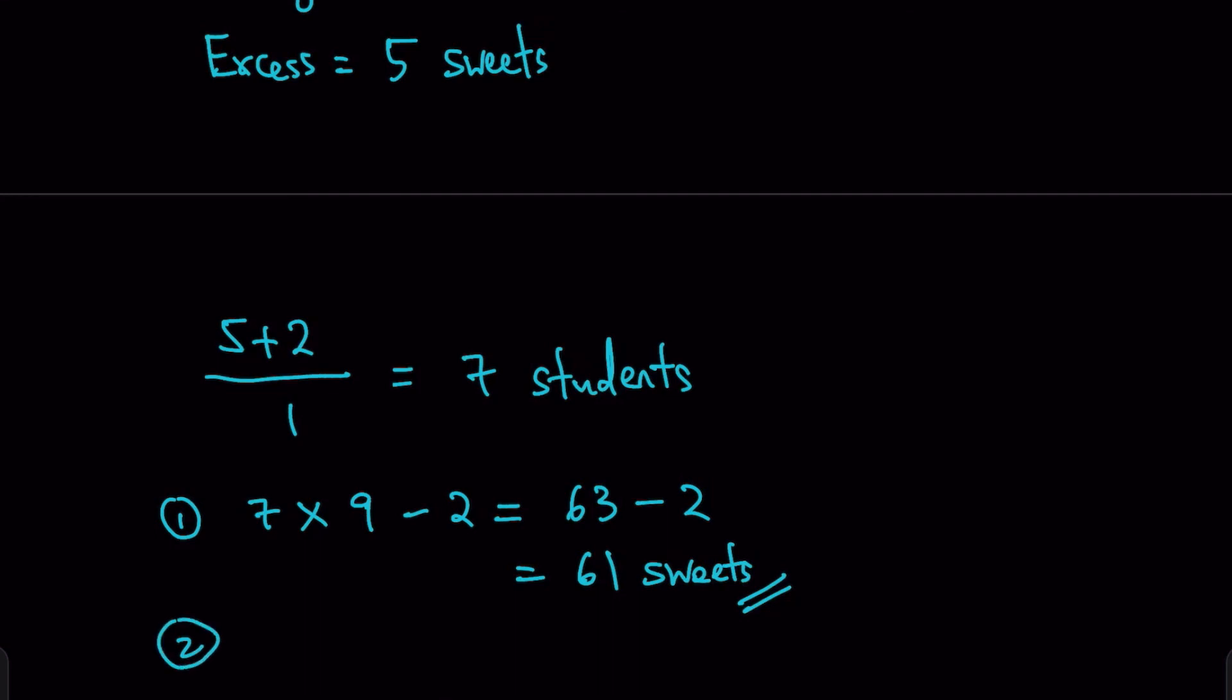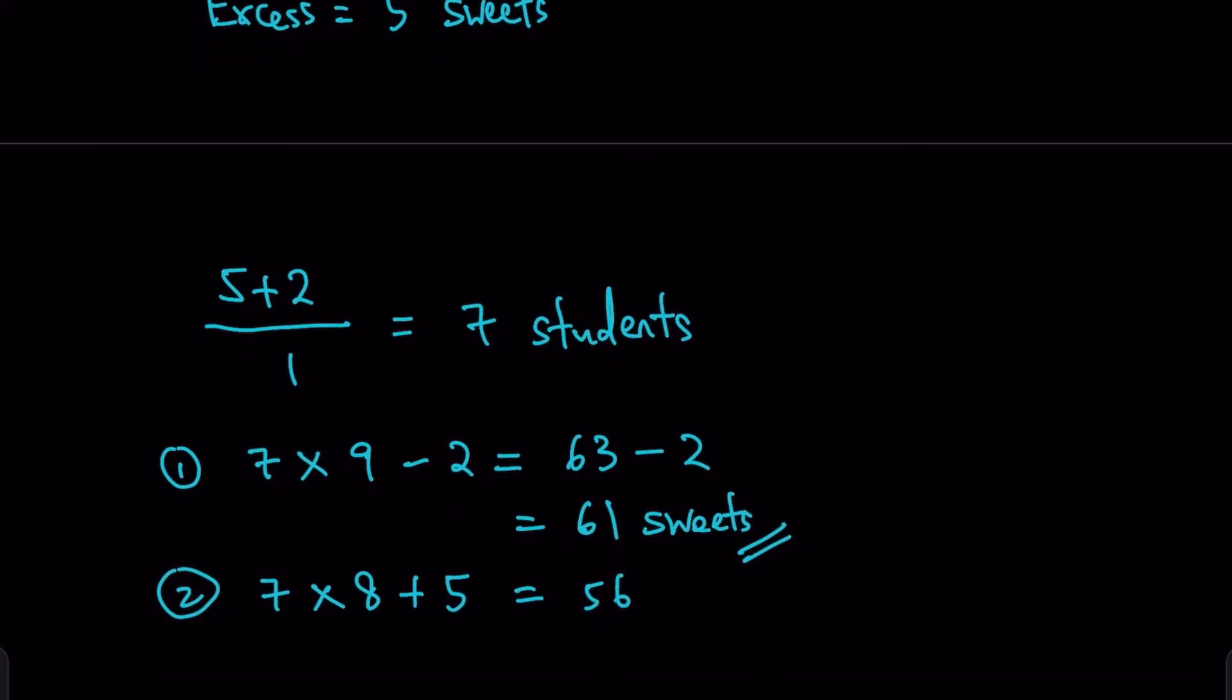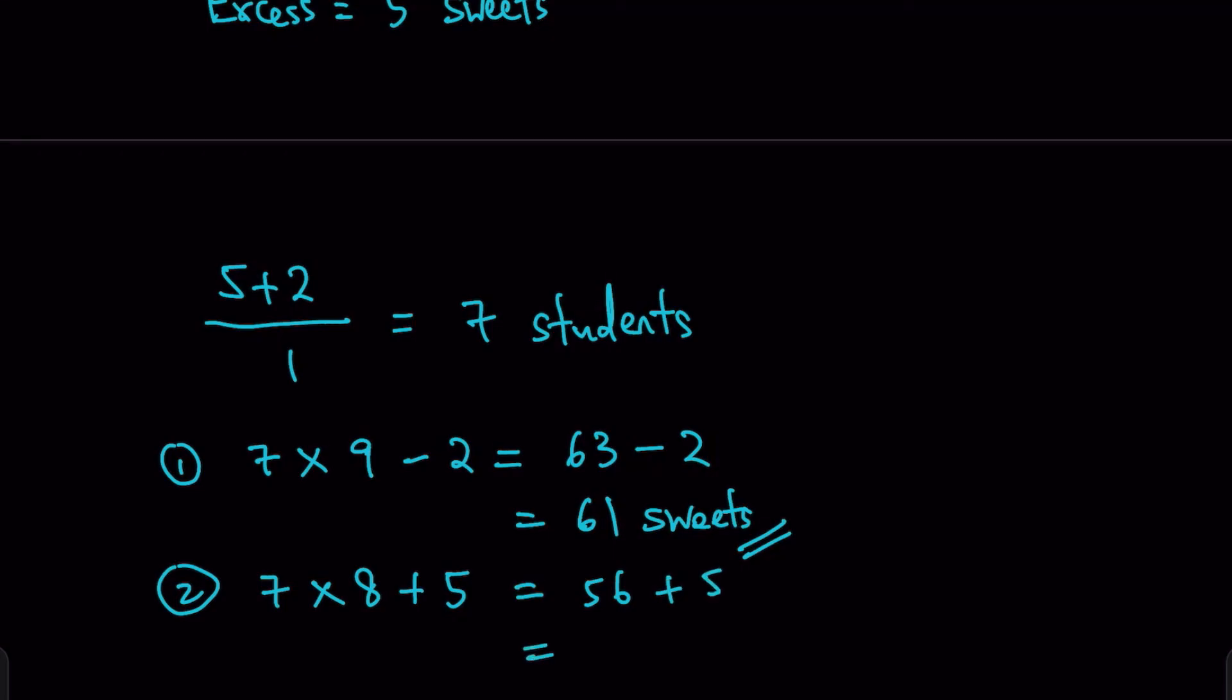You can also use case 2, and you should be able to get the same answer. In this case, you have 7 students, 8 sweets. But the difference in the cases is there will now be 5 remaining sweets which are not given out, which means there's an extra of 5 which you have to add it in. And you'll have 56 plus 5, which will give me 61 sweets as well. So that's the answer for question 5.